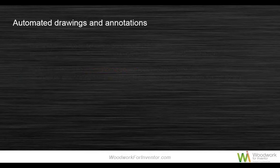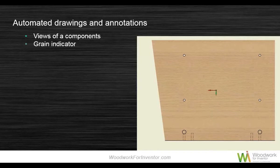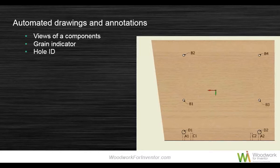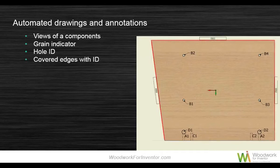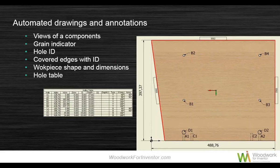We can create automated drawing bundles — typically a single panel. There's lots of hole and cut-out information and edging information to display. We can have a grain indicator placed on the sheet, define hole information, and it assigns edge codes automatically. It will apply a datum with the overall sizes, and you can generate an optional hole table that's placed on the drawing sheet automatically.